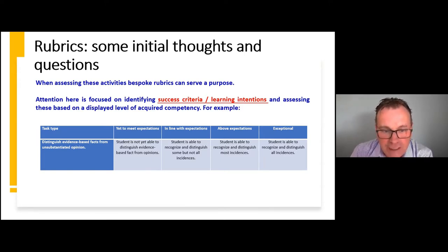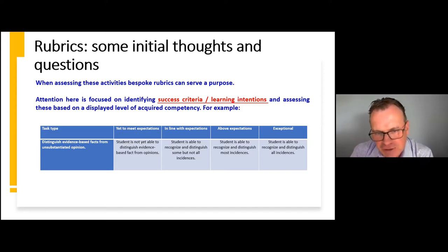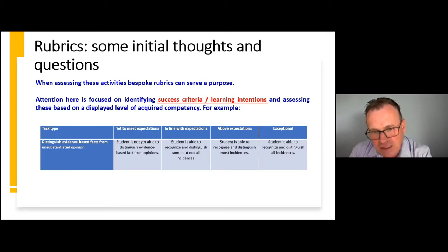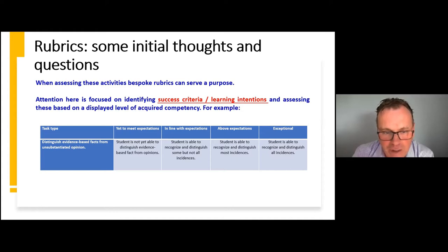For example, the task type here has a key success criteria: distinguishing evidence-based facts from unsubstantiated opinions. We're assessing that in relation to whether students have achieved it or not. You see four different levels: 'yet to meet expectations' — we don't use the word 'fail' — 'in line with expectations,' 'above expectations,' and 'exceptional.' This gives us an example that we'll unpack.